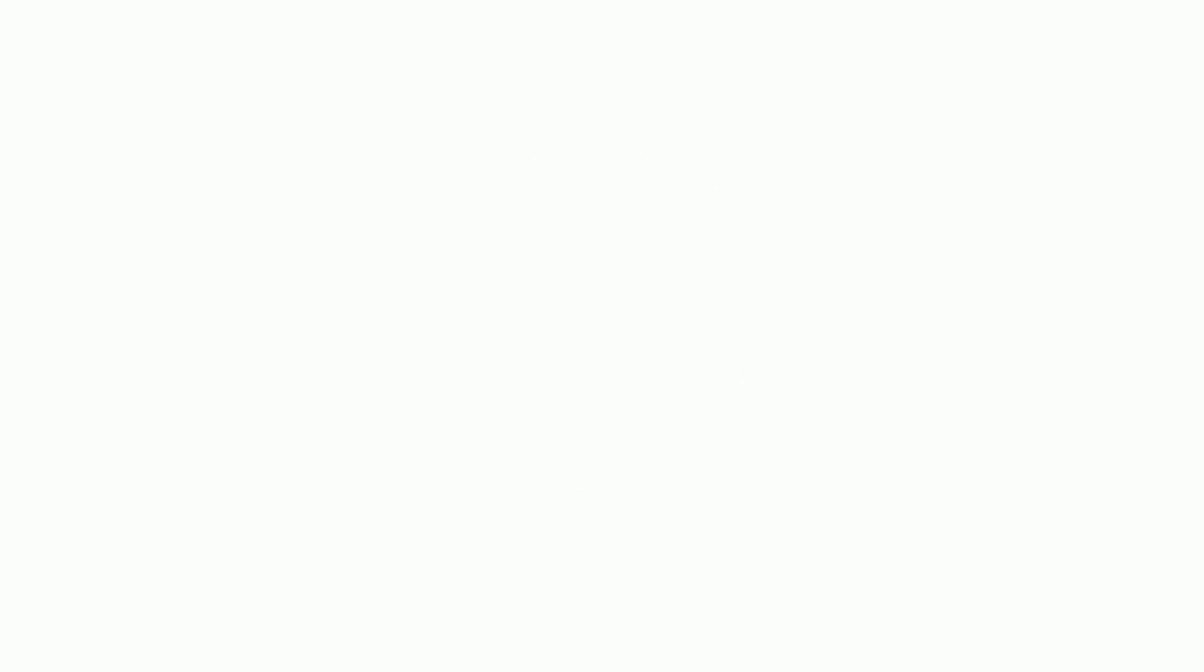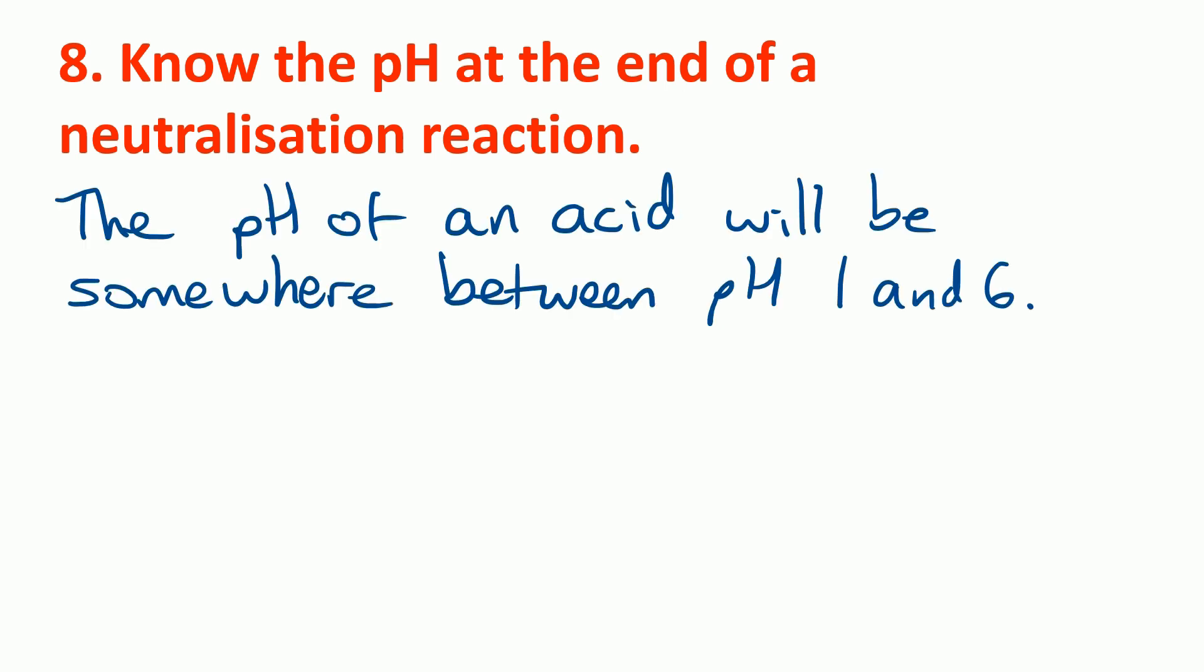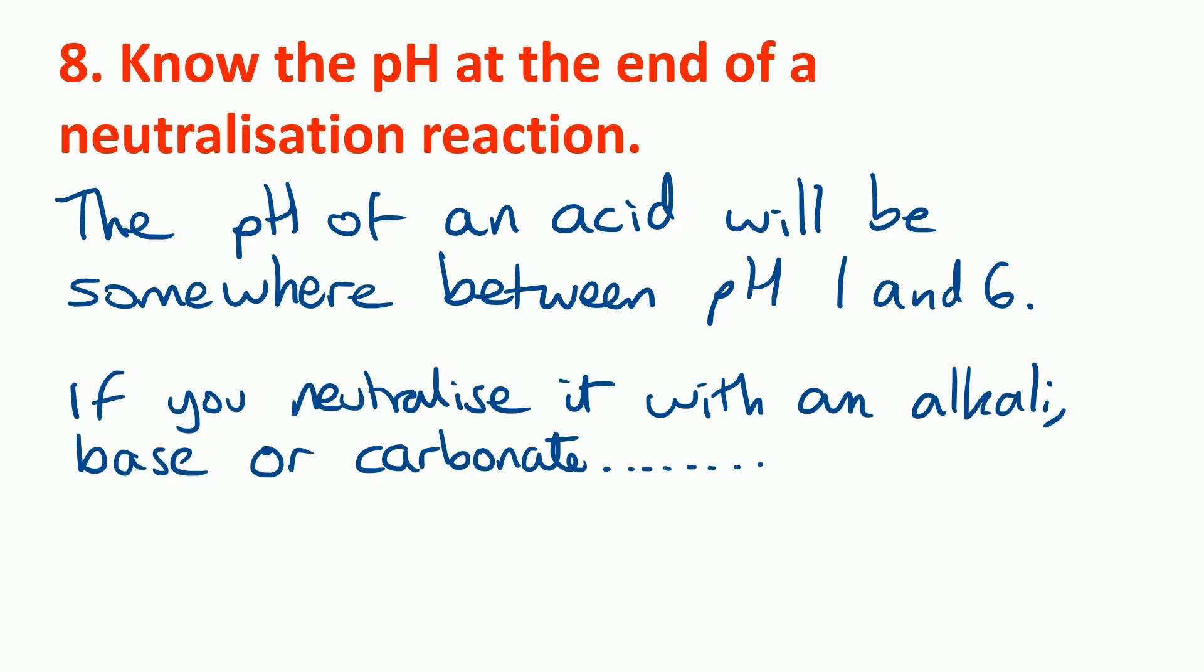In at number 8 on this year's chart, many students didn't know the pH at the end of a neutralisation reaction. So the pH of an acid would be somewhere between pH 1 and pH 6 at the start of your reaction. And like we've just seen, you can neutralise it with an alkali, a base or a carbonate. When that acid is fully neutralised, the pH will then be 7 at the end of the reaction.